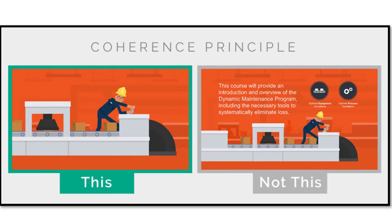If you look at the picture here, you see just a picture of a guy with a machine. On the other side labeled 'not this,' you see it has some extra stuff that students really don't need to understand. You're already going to tell them what the program is about, so they don't need to see that written down.